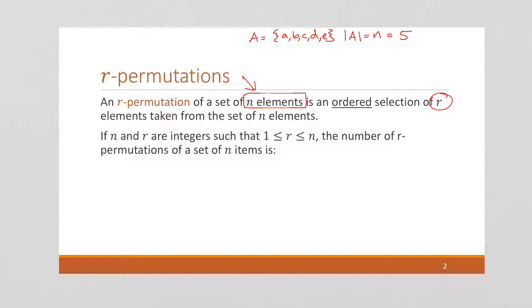Now if we let r equal 3, what that's saying is how many ways can I grab 3 elements out of A and organize them? So we would have A, B, C is one ordering.